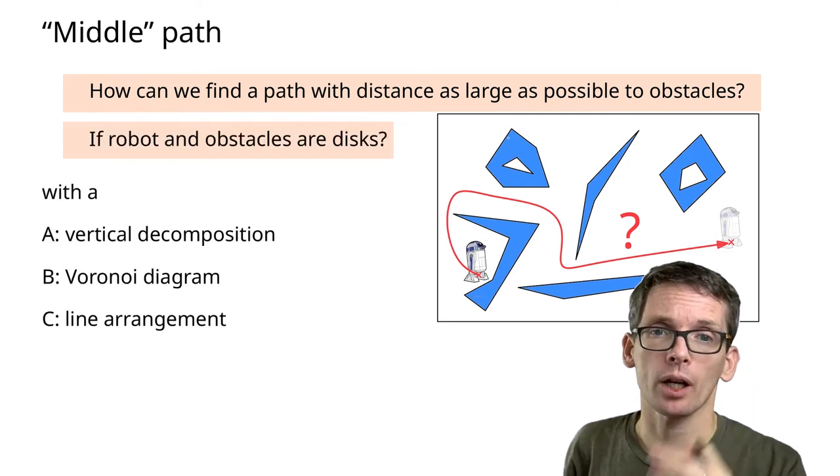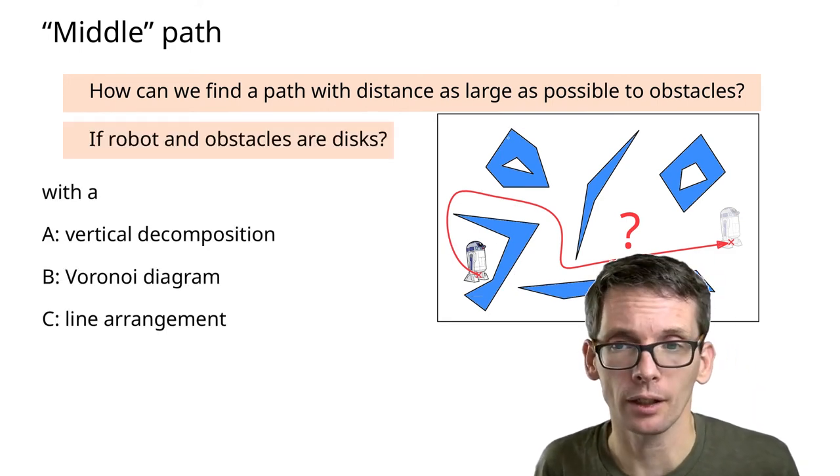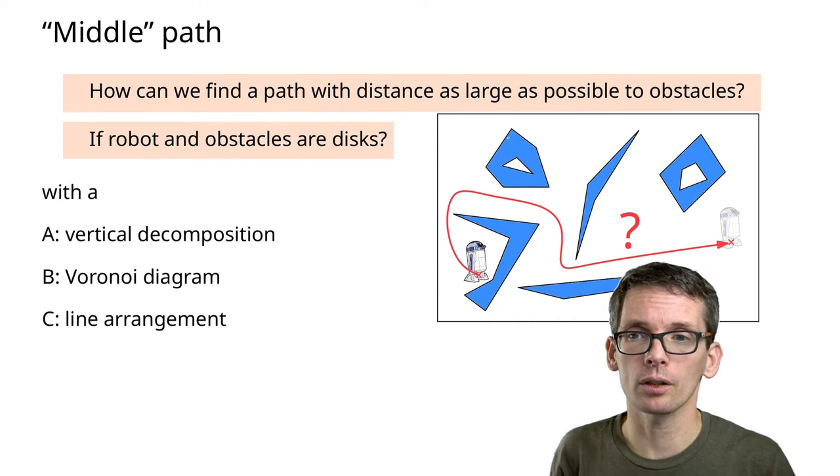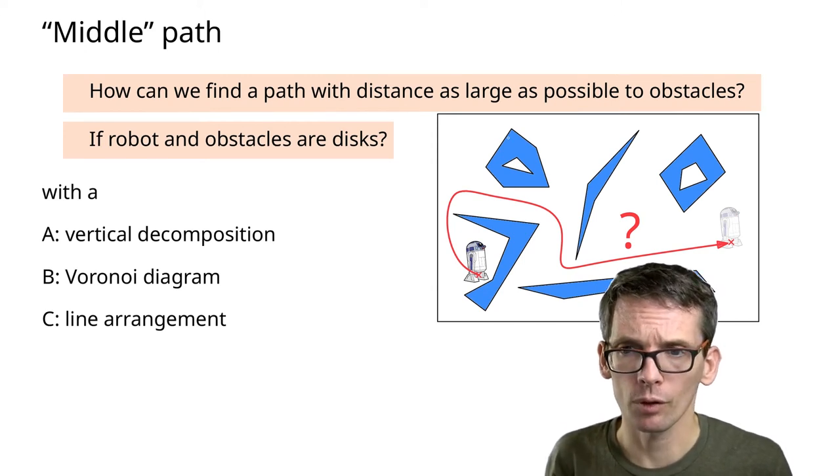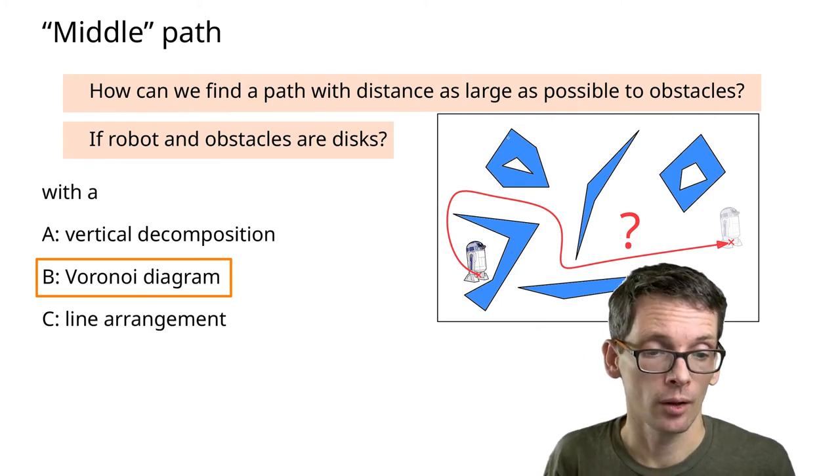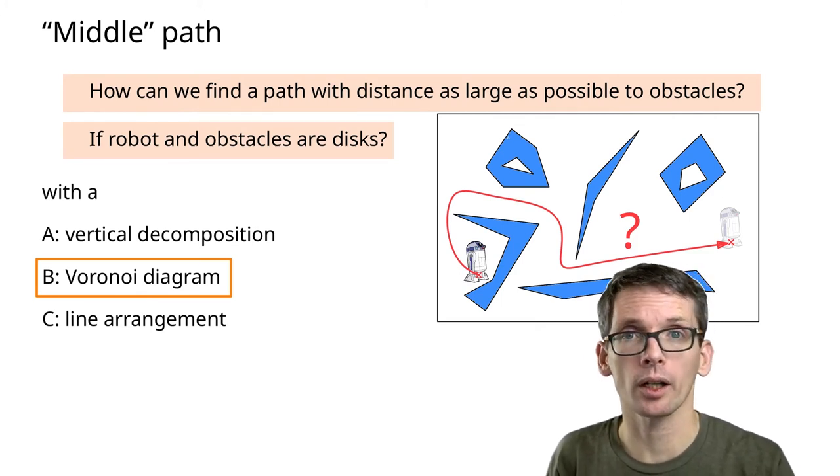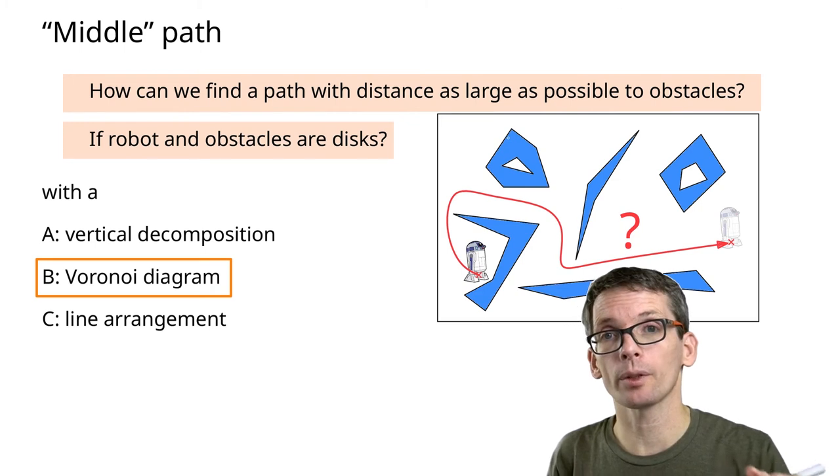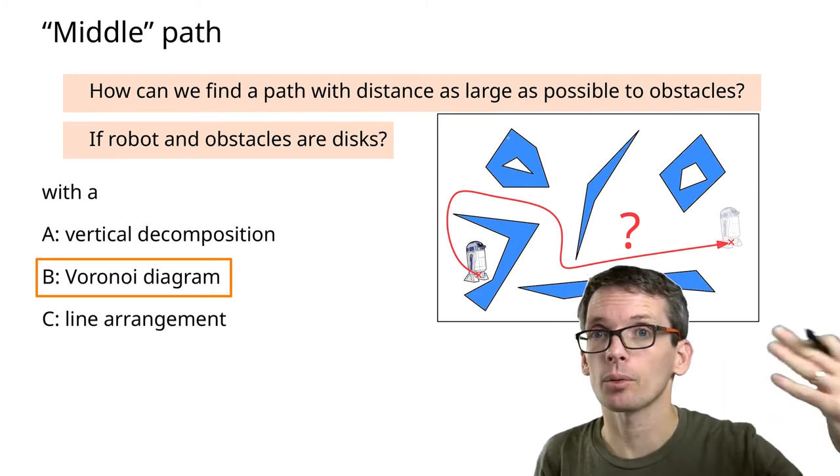My robot is a disk, my obstacle here is also a disk, and all other obstacles too. Which of the concepts that we know can we use in this setting? Vertical decompositions, Voronoi diagrams or line arrangements?